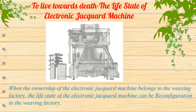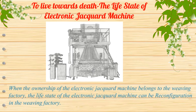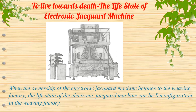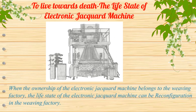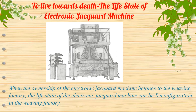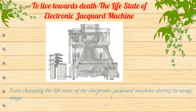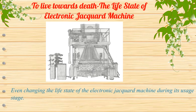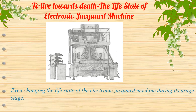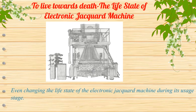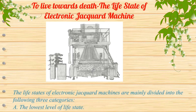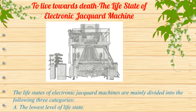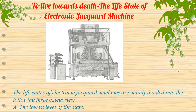When ownership of the electronic jacquard machine belongs to the weaving factory, the life state of the machine can be reconfigured within the factory, even changing the life state during its usage stage. The life states of electronic jacquard machines are mainly divided into the following three categories.